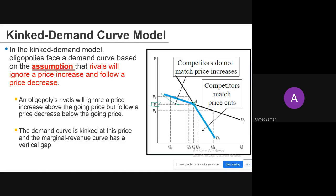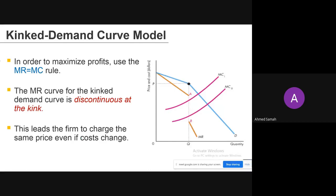The demand curve is kinked at the point where the price is decreased below the going price, and the marginal revenue curve has a vertical gap at this kink. To maximize profits we use MR = MC, but the marginal revenue curve for the kinked demand curve is discontinuous at the kink. This gap caused by the kink leads firms to charge the same price even if costs change.